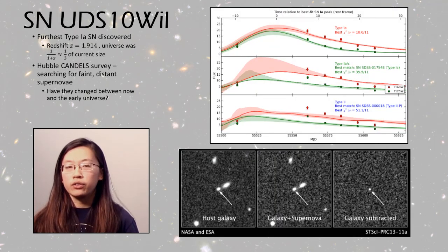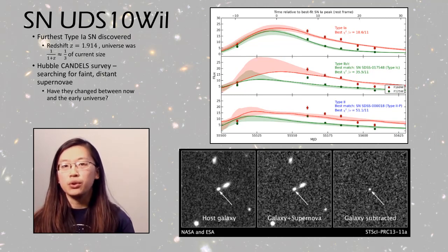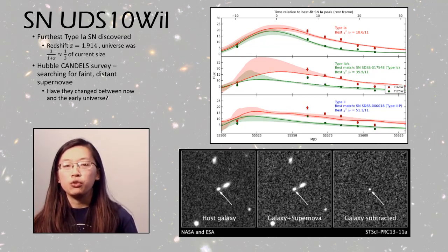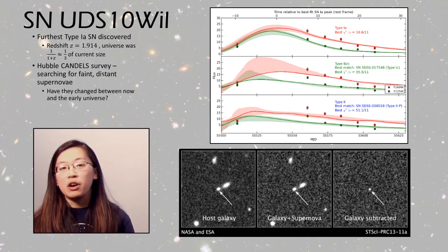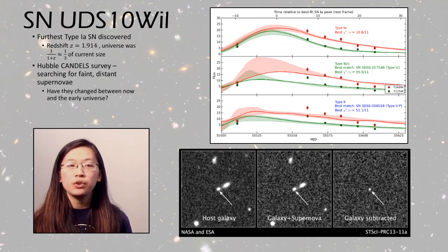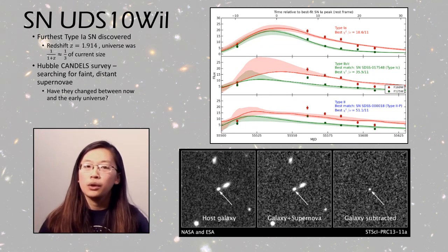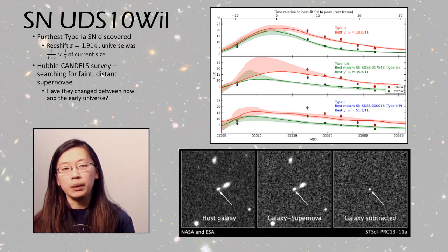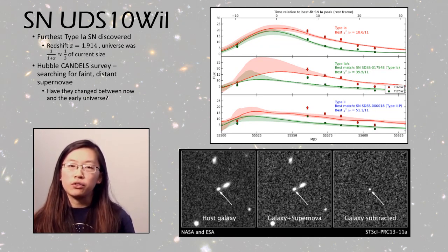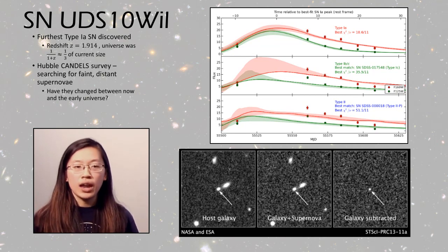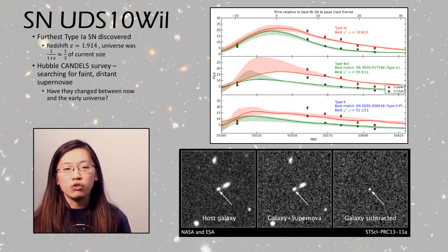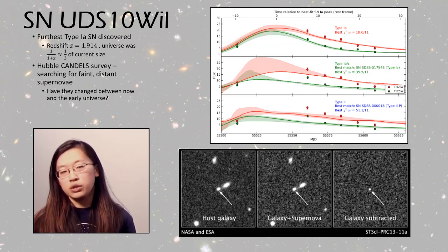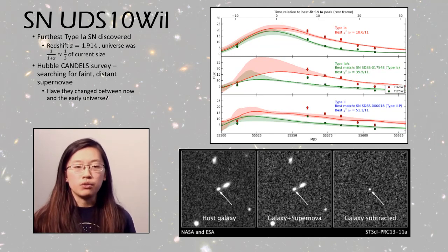This leads into our next category of DSOs about the early universe. Supernova UDS-10 Will is the furthest type 1a supernova ever discovered, found at a redshift of about 1.9, meaning the universe was only about one-third of its current size. This was found by the Hubble CANDELS survey, which specifically searches for faint and distant supernovae — particularly type 1a's, which are used as standard candles to measure distances. It's really important to know whether these supernovae have changed their characteristics between nearby ones and those in the early universe.